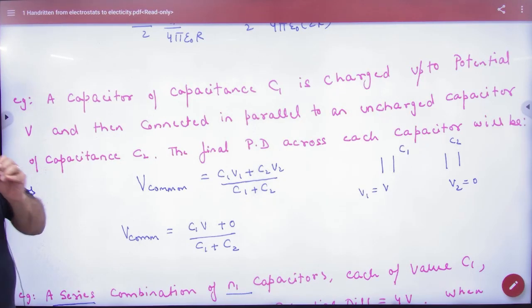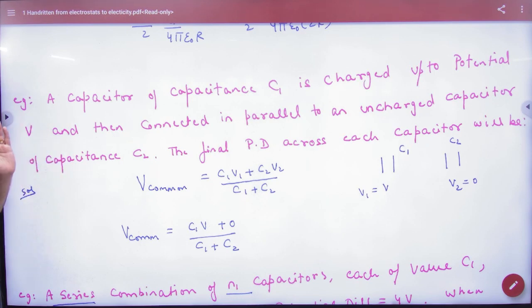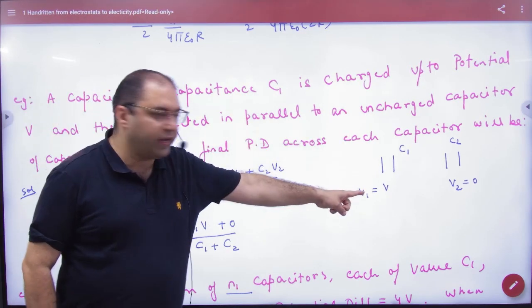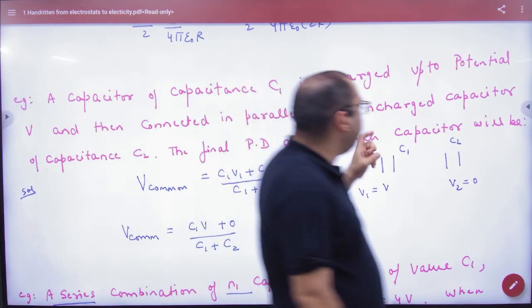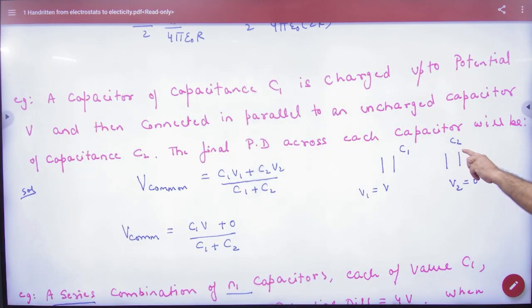A capacitor of capacitance C1 is charged up to a potential of V. So this is C1 capacitor. How much is the potential V? Next is connected in parallel to an uncharged capacitor. So C2 capacitance here. But V2 is zero.